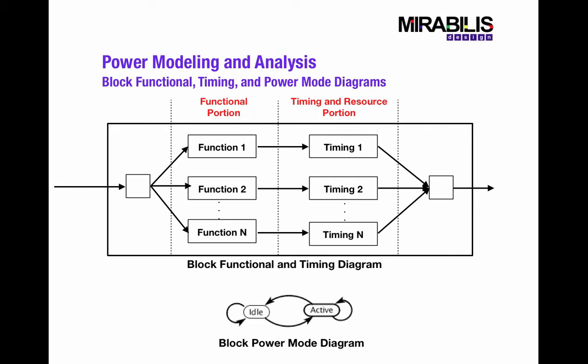The way that we do all of these types of metrics is as follows. Every hardware block has what we call a functional portion, which is what the block does, a timing and resource-based portion, which is how long it takes to do the service, and then at the bottom, the block power mode diagram, which is a diagram or state diagram that represents whether the device is active or idle.